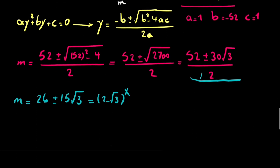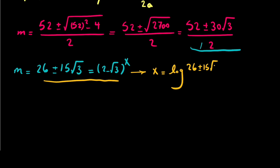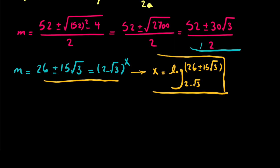We wanted to find x. So x will be equal to the logarithm of (26 plus or minus 15 times the square root of 3) to base (2 minus the square root of 3). This means our equation has two solutions. And of course, 26 plus or minus 15 times the square root of 3 is positive — you can verify with a calculator — so there are no issues with the logarithm.